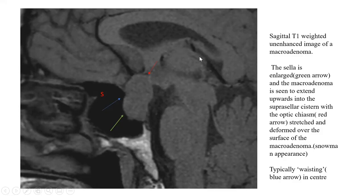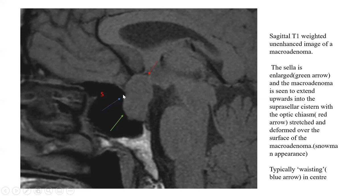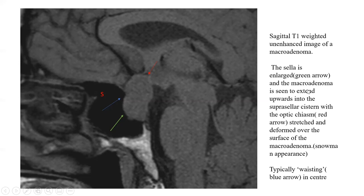It is a T1 sagittal image. The sella has expanded — the mass is arising from the sella, expanding it, and extending into the sphenoid sinus. The green arrow shows the enlarged sella; the blue arrow shows waisting in the center, very typical of a macro adenoma and of a lesion arising from the sella extending into the suprasellar region. The red arrow shows the optic chiasm getting compressed or stretched, and S is the sphenoid sinus. Clearly this is a pituitary macro adenoma secreting high prolactin — a macro prolactinoma — and because this lady is trying to conceive, bromocriptine is the drug of choice.